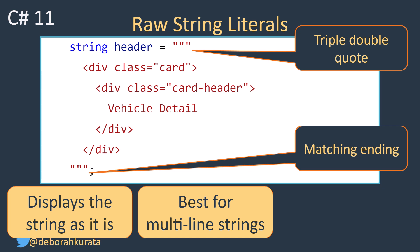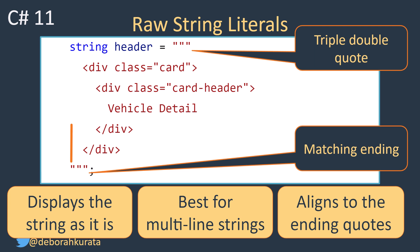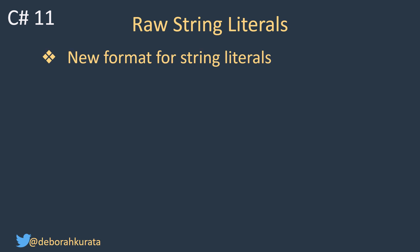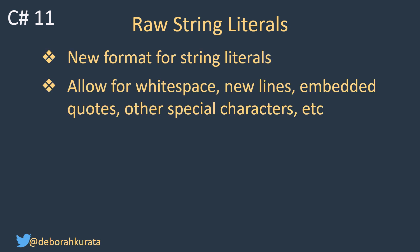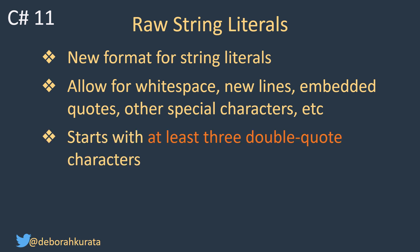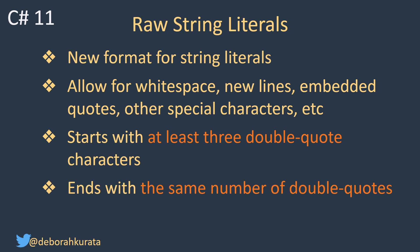Another important feature of raw string literals is that they align to the ending quotes. So if we display this string, it will be indented one tab since it is one tab from the beginning of the end quote. Raw string literals allow for white space, new lines, embedded quotes, and other special characters. They start with at least three double quotes. The C# team wanted the feature to have a long life, so they made it configurable. If for some reason you need triple quotes within the string, you could use quad quotes to enclose the raw string literal. The raw string literal must always end with the same number of double quotes.